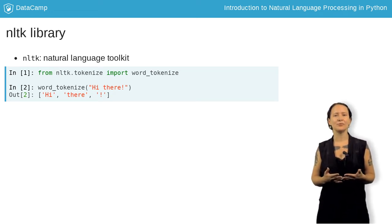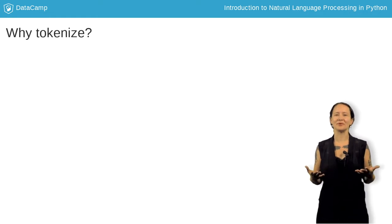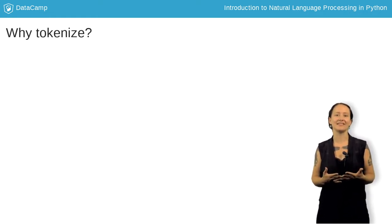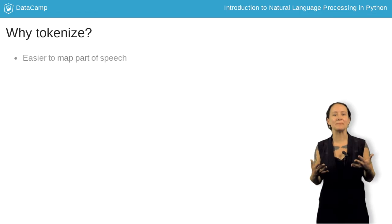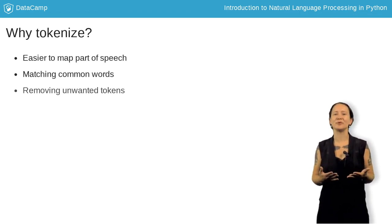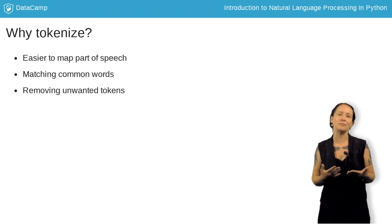So, why bother with tokenization? Because it can help us with some simple text processing tasks, like mapping parts of speech, matching common words, and perhaps removing unwanted tokens like common words or repeated words.